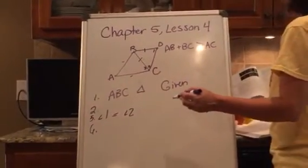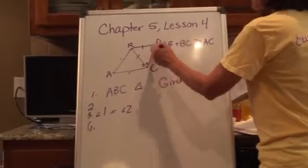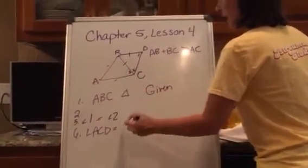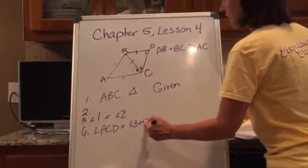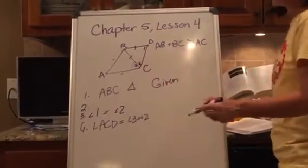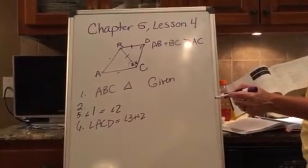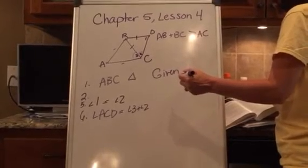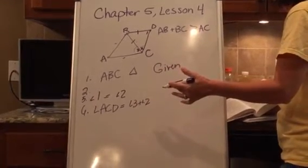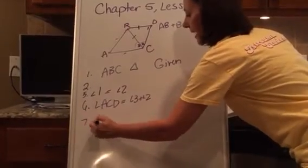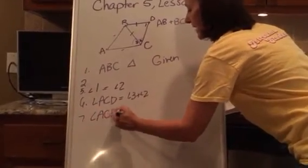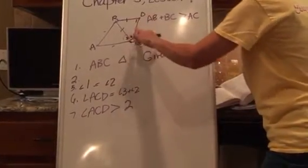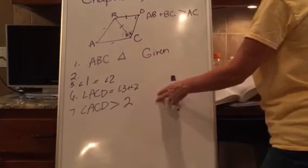Number six: I can say that ACD, that entire angle ACD, is the sum of angle three plus angle two. That's betweenness of rays. And then I could say by the whole greater than the part that angle ACD has to be greater than any part. Angle ACD, the whole is greater than the part, and that's that reason.